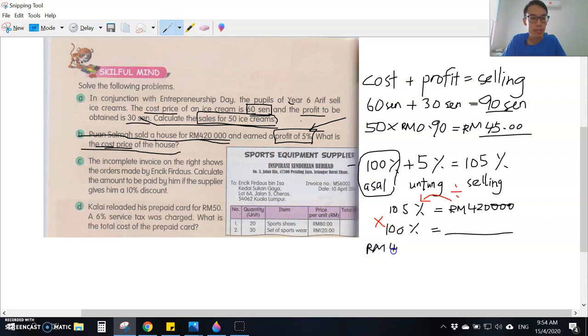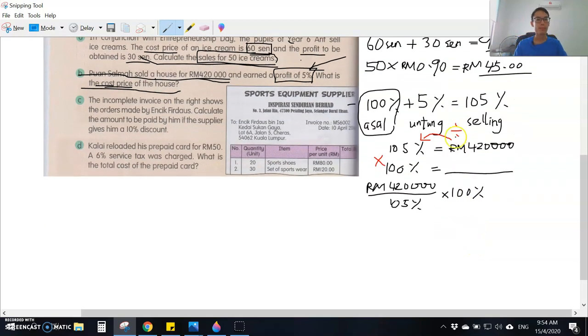105 percent equals RM420,000. 100 percent equals what? The formula is: divide this one, and then you times 100 percent. So 420,000 divided by 105 percent, and then you times 100 percent.